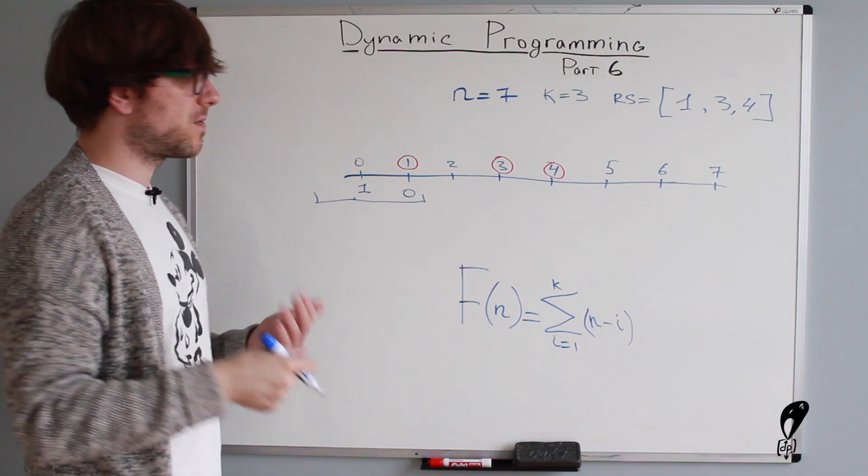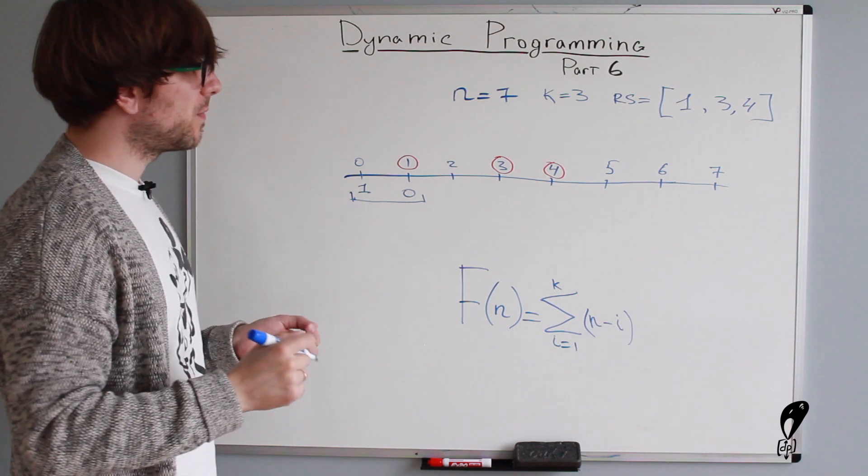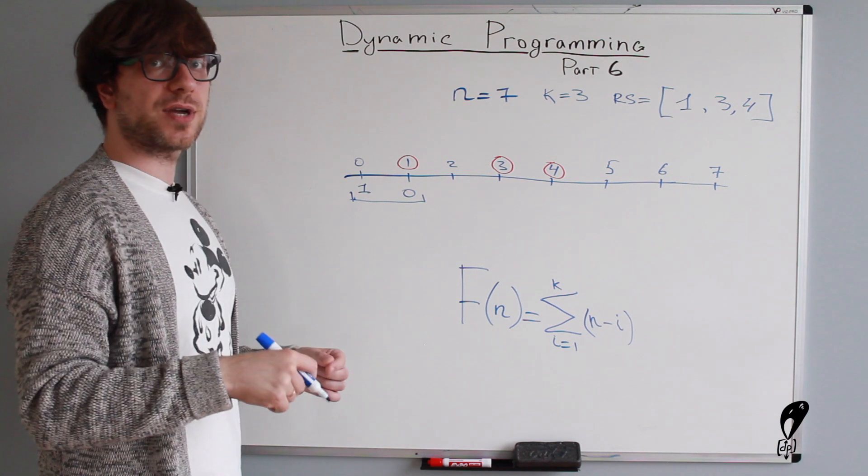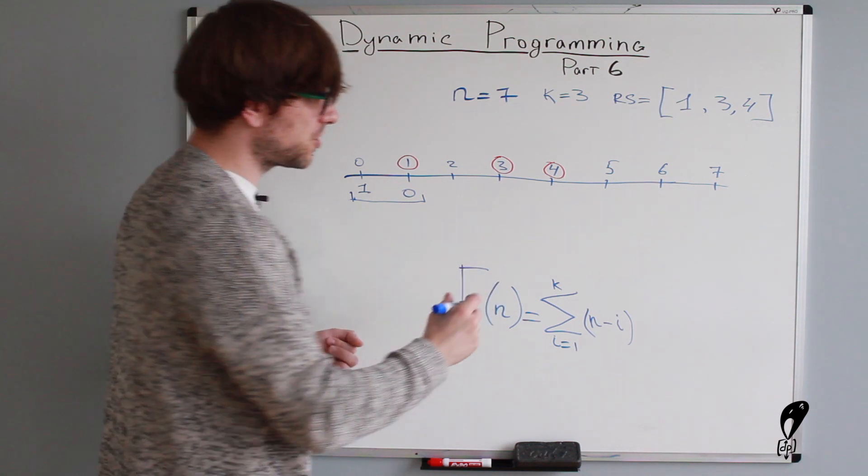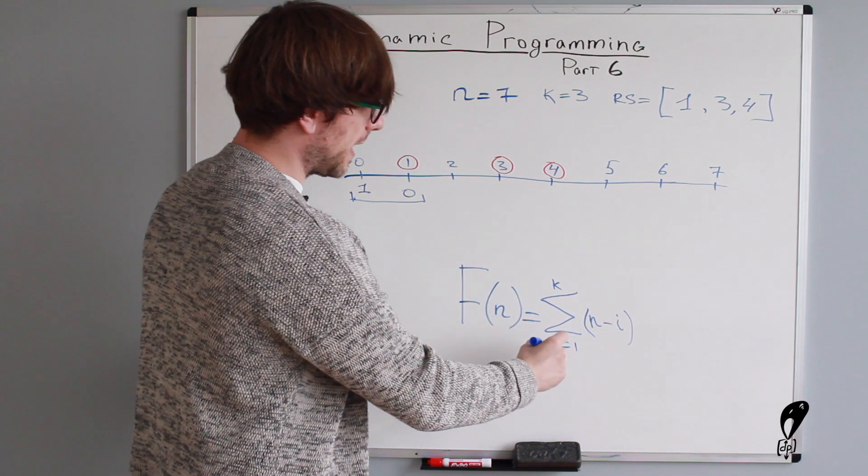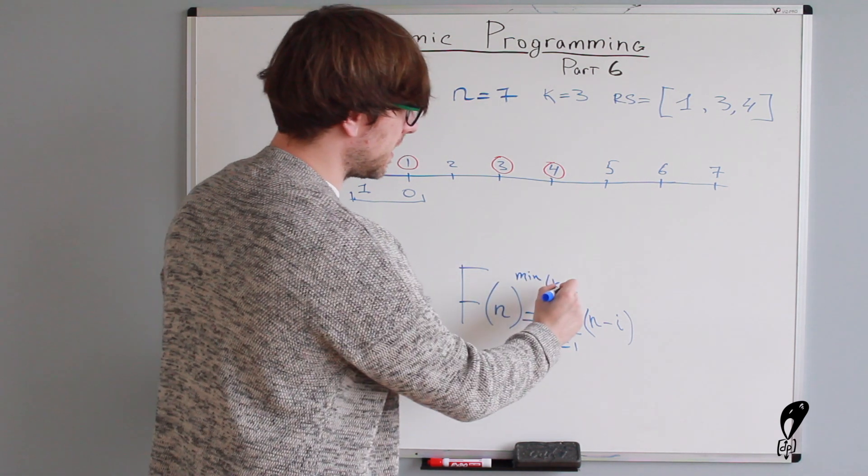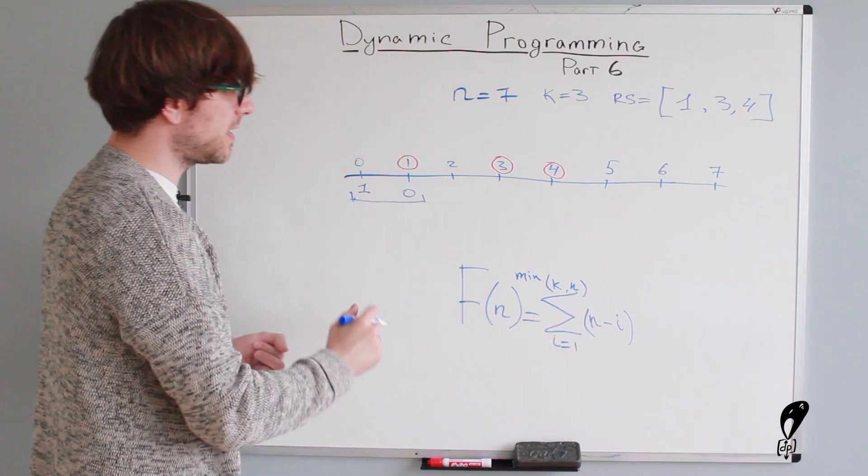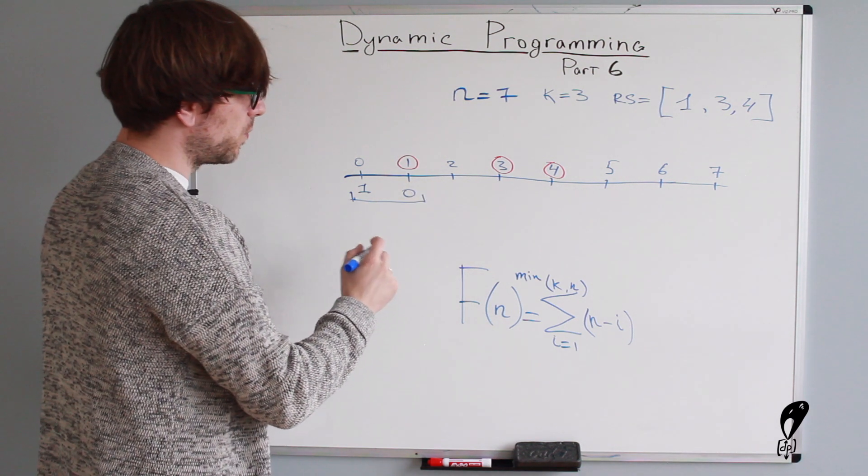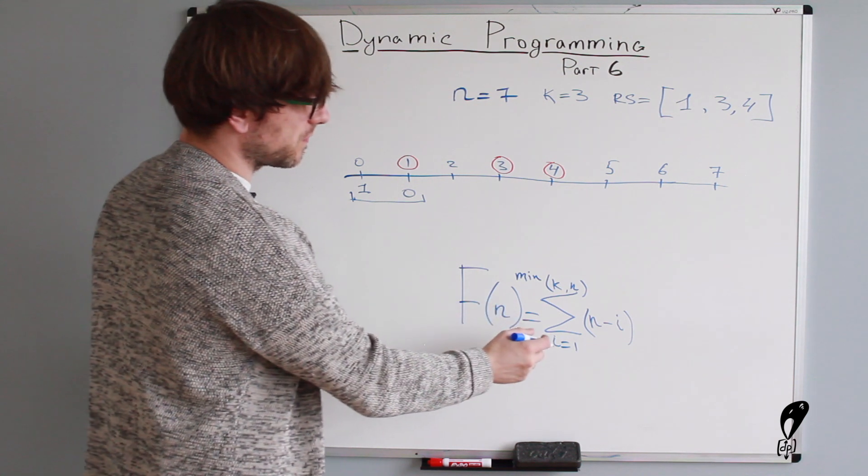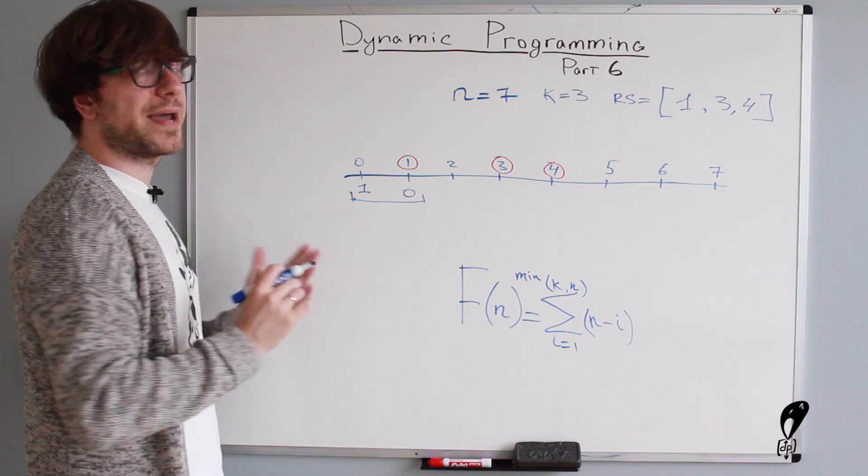So in order to prevent from this to happen, we would need to either have an if statement in our code, which would ignore these cases. And this is something we implemented in the previous lecture or the other option is to run the loop starting from I and then not to K, but to the minimum between K and N. So in this case, when we run the loop for two, it's going to be like starting from one to two, not to three. So this is like a minor trick that you can use.